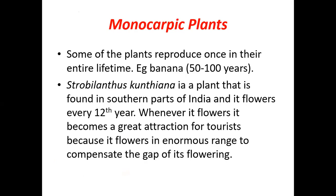Monocarpic plants are those that reproduce only once in their entire lifetime. For example, banana lives for fifty to a hundred years, flowers only once in its lifetime, then fruits, and after that dies.